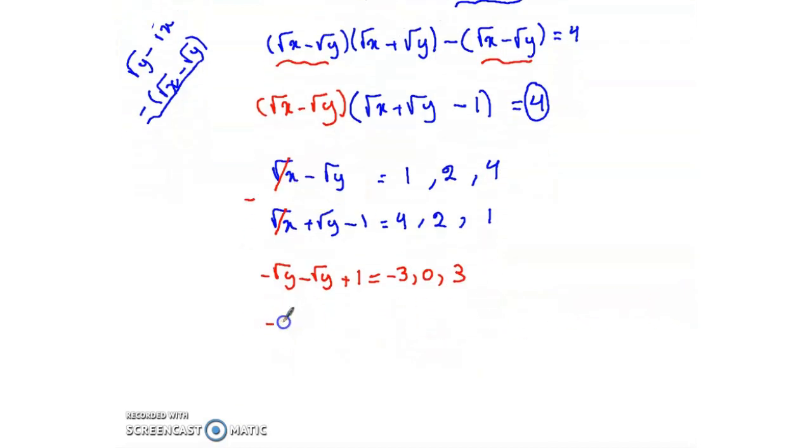So minus 2 radical y plus 1 equals minus 3, 0, or 3. Subtracting 1 from both sides gives minus 4, minus 1, and 2.